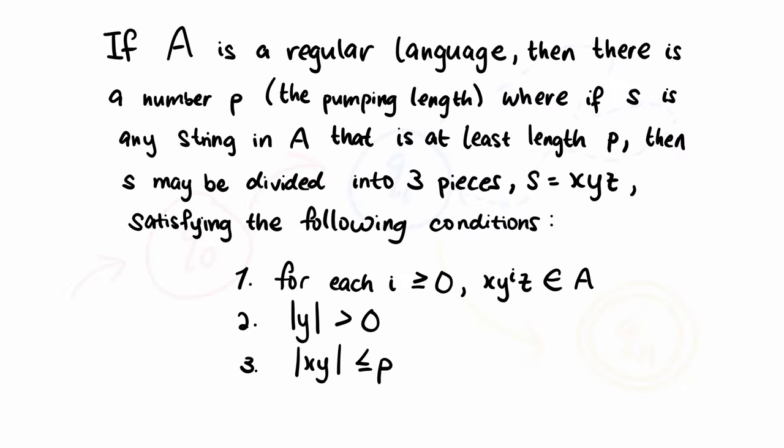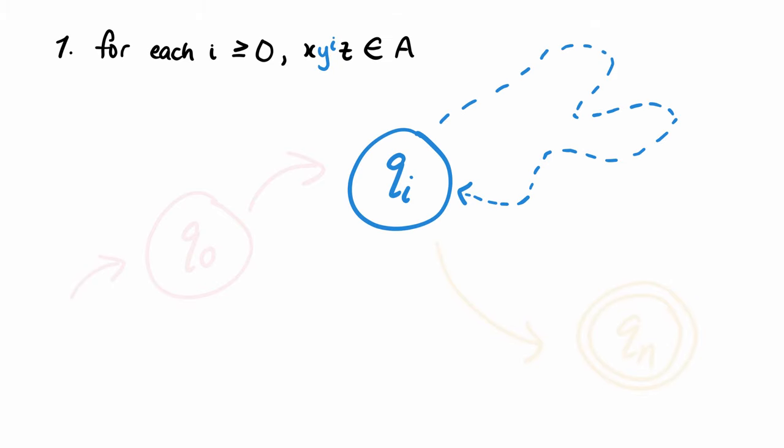Which if you look at the formal statement of the pumping lemma, is what all this means. The following three points are just some more technical conditions. The first point says that for any string in the regular language, there will be a part that can be pumped any number of times, which we call Y.